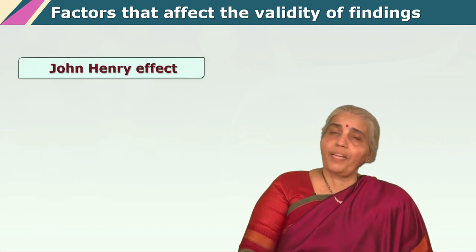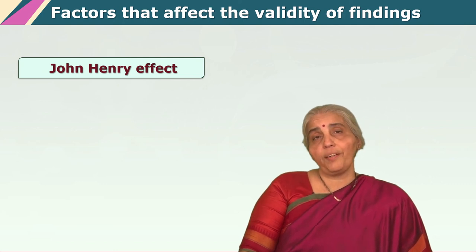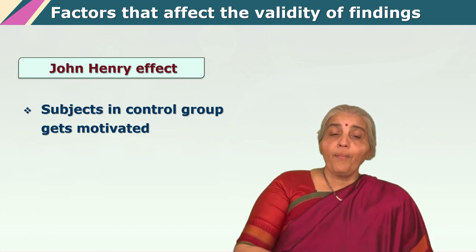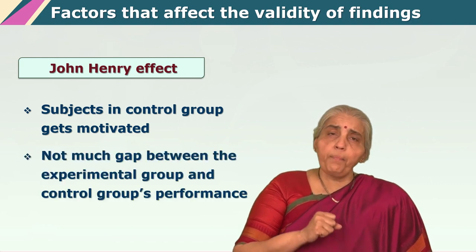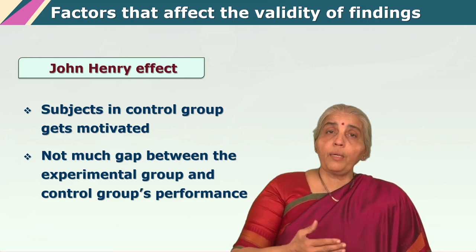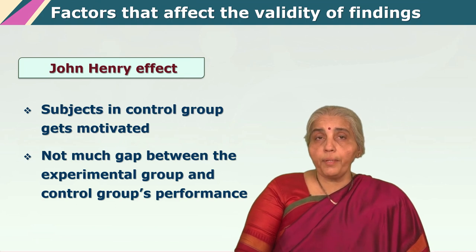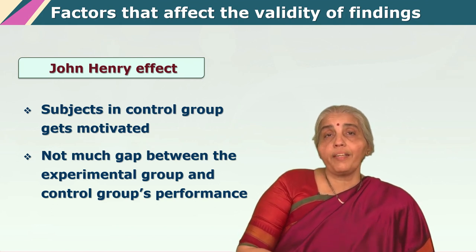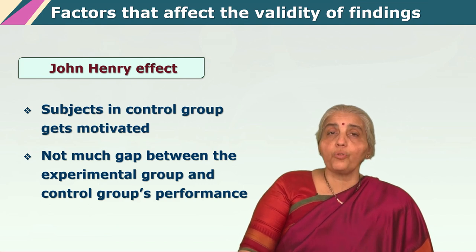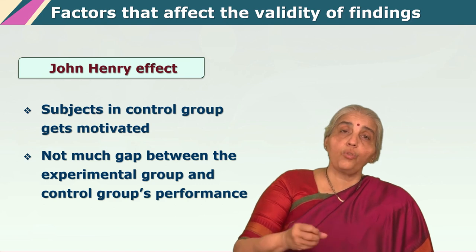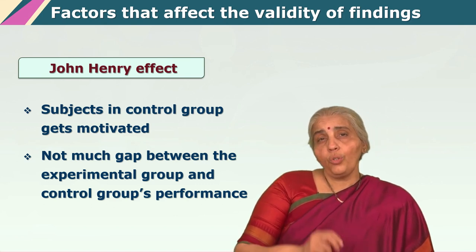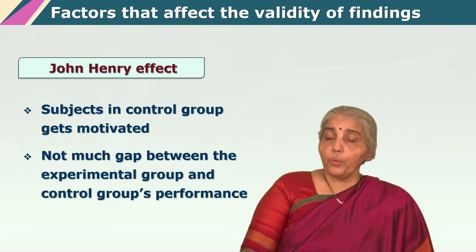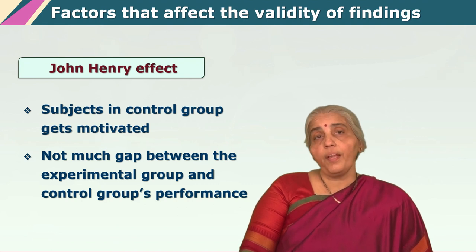Sometimes one comes across another very interesting effect which has been called the John Henry effect. What can happen — and this happened with the gentleman called John Henry which is why it is given this name — is that subjects in the control group start feeling very motivated to do well for some reason. Although they are really not being given the experimental treatment, they begin to try very hard to perform well, and so your data starts looking very similar with not much gap between the experimental and control group performance. So these are the subtle little difficulties that can come up in the course of experimentation, and one must take great care to ensure that they do not interfere with the experiment.